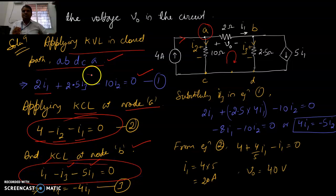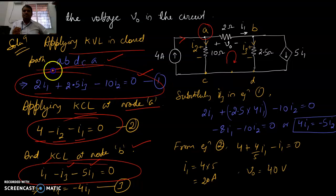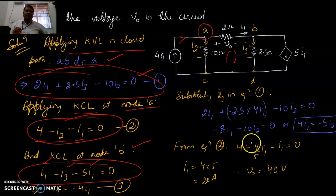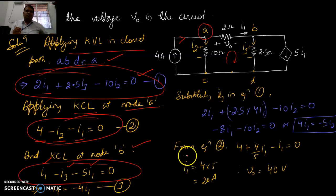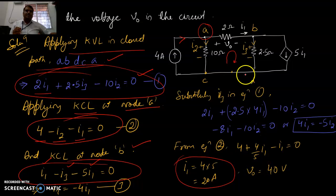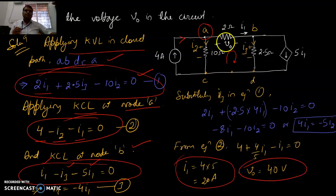You now have three equations, and these three equations will help you solve this problem. You will find that the value of I1 is 20 amperes. From I1 you get V0: 20 multiplied by 2 equals 40 volts.